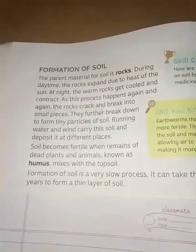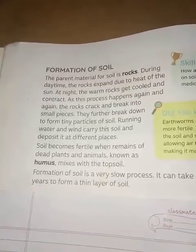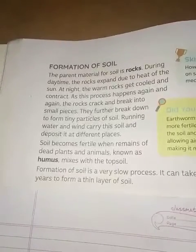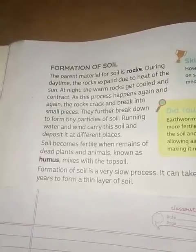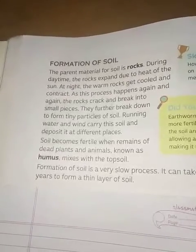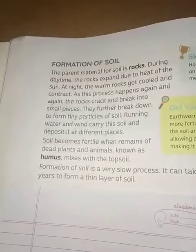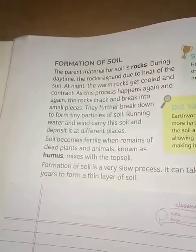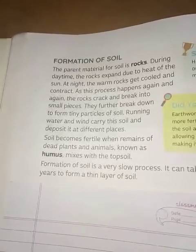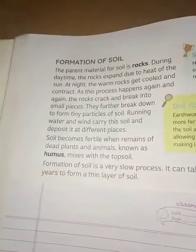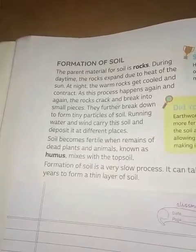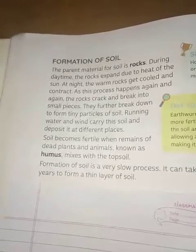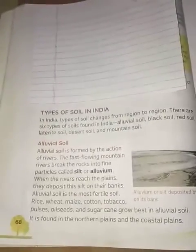The basic material to form soil is rocks. These rocks expand due to heat from the Sun, then cool down, and this process repeats again and again, causing the rock to crack and break into smaller pieces. Rain water and winds carry and deposit these particles at different places. When the decomposed remains of dead plants and animals get mixed with this, it becomes known as humus, which mixes with the topsoil — this is how soil formation happens.